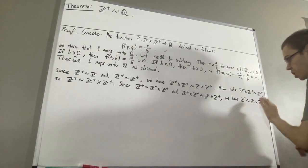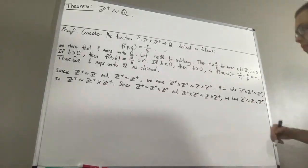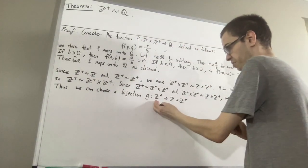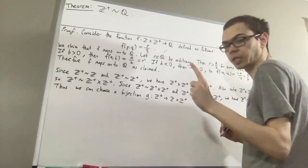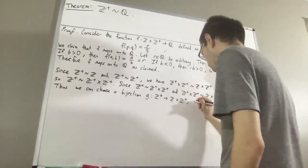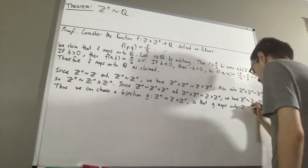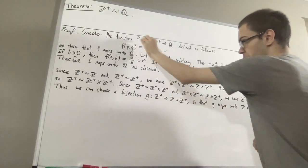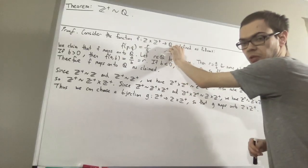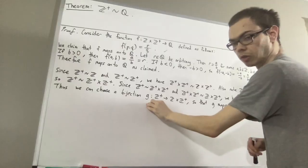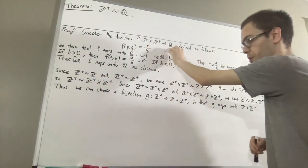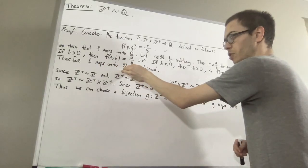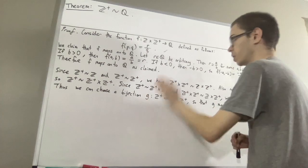There is a bijection from the set of positive integers to ℤ×ℤ⁺; call that bijection G. Since G is a bijection, G maps onto ℤ×ℤ⁺. Now consider the composition F∘G: G is a function from ℤ⁺ to ℤ×ℤ⁺, and F is a function from ℤ×ℤ⁺ to ℚ, so F∘G is a function from ℤ⁺ to ℚ. Since G maps onto ℤ×ℤ⁺ and F maps onto ℚ, their composition F∘G maps onto ℚ.